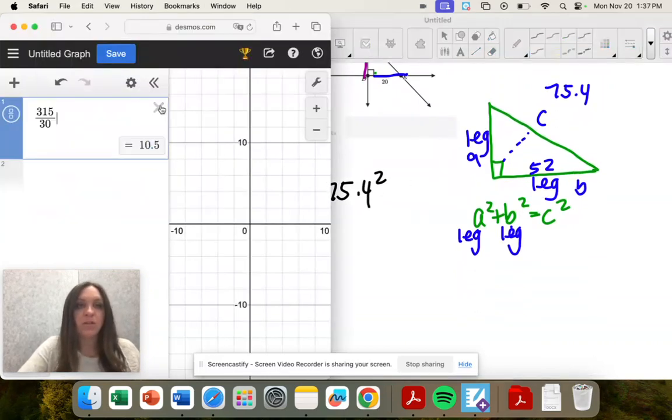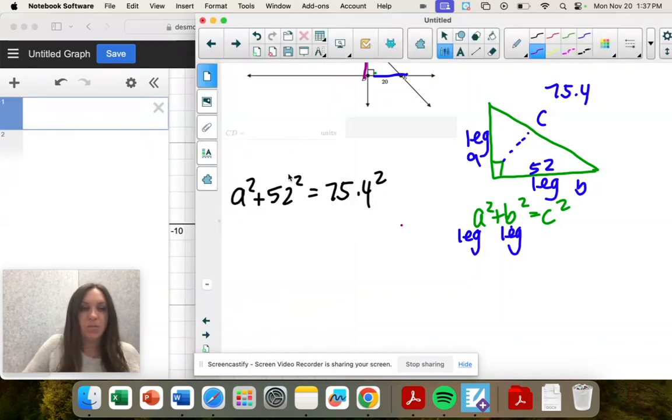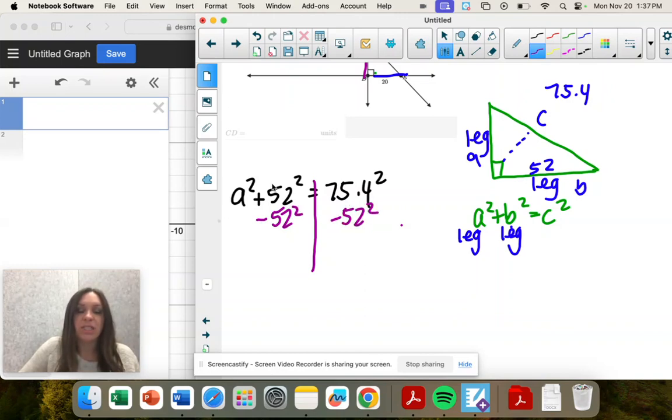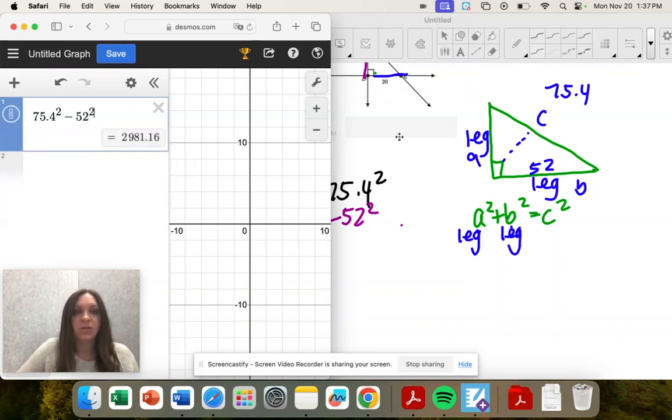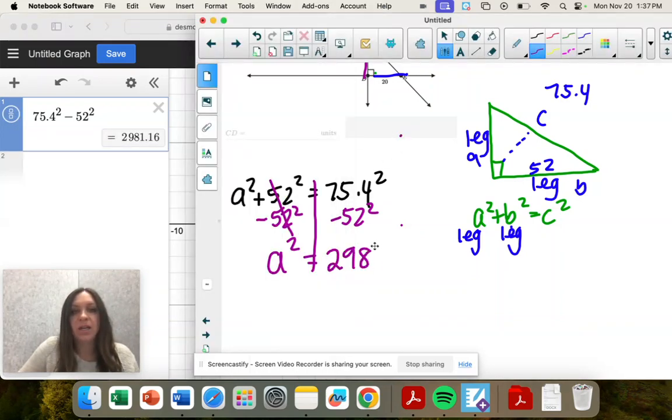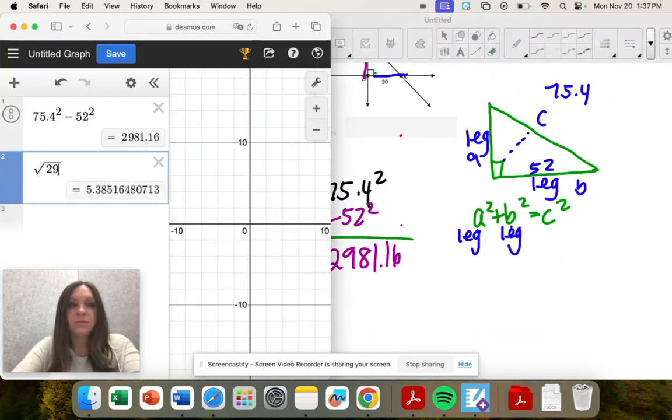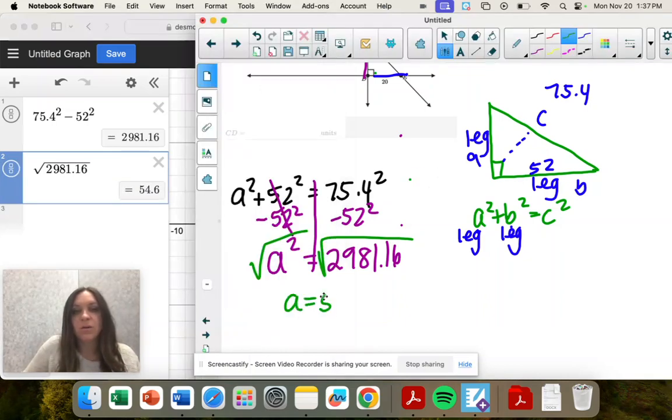So from here, you can get the big numbers or you can keep them. I'm going to keep it squared for a minute so I don't have to write them out. I'm going to subtract the 52 squared on both sides. So I have A squared equals, and now I'm going to type it in with the squares instead of having to do that twice. So 2981.16. And then to get rid of a square, we take the square root. So now I'm going to square root that. And it's 54.6.